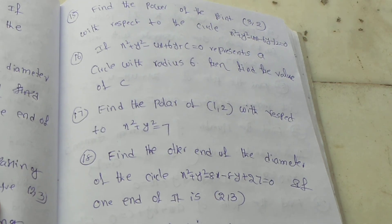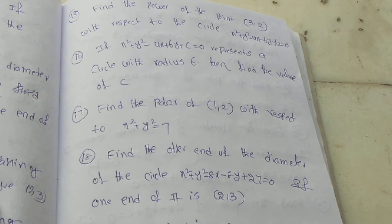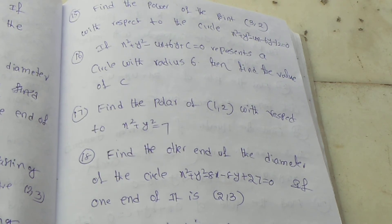Sixteenth question: If x square plus y square minus 4x plus 6y plus c equal to 0 represents a circle with radius 6, then find the value of c.